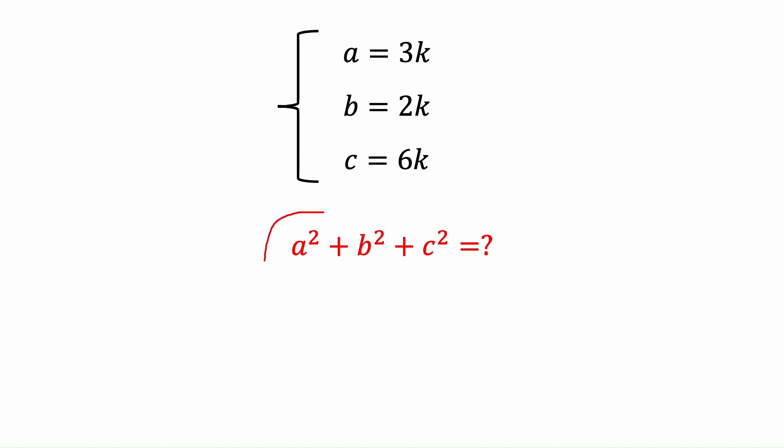The question was finding a² + b² + c². Now we have each of them based on k, and we found that k² equals 500 over 3. So now we can substitute each of the variables based on k: a is 3k so we have (3k)², b is (2k)², and c is (6k)².